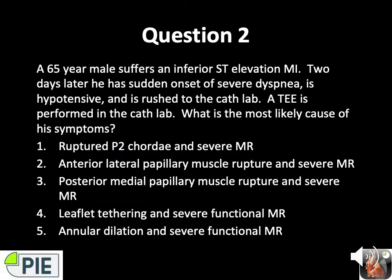Question number two: A 65-year-old male suffers an inferior ST elevation MI. Two days later he has sudden onset of severe dyspnea, is hypotensive, and is rushed to the cath lab where a TEE is performed. What is the most likely cause? Ruptured P2 chordae in severe MR? Anterolateral papillary muscle rupture in severe MR? Posterior medial papillary muscle rupture in severe MR? Leaflet tethering and severe functional MR? Or annular dilatation and severe functional MR?